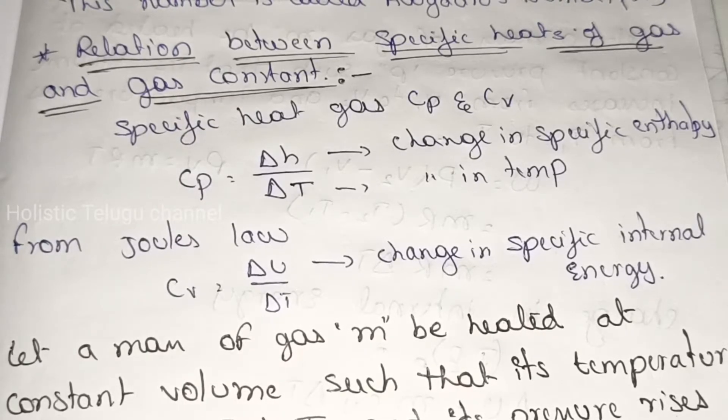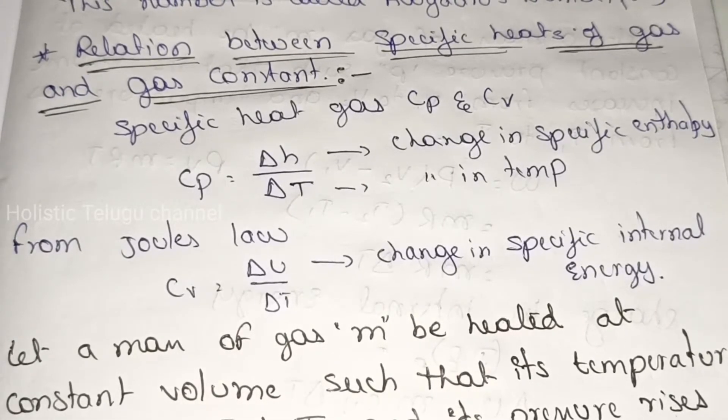Here is the specific heat of gas, Cp and Cv. These are the Cp and Cv values. Cp is equal to delta H by delta T.